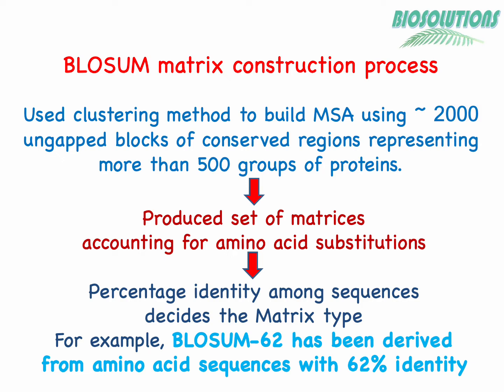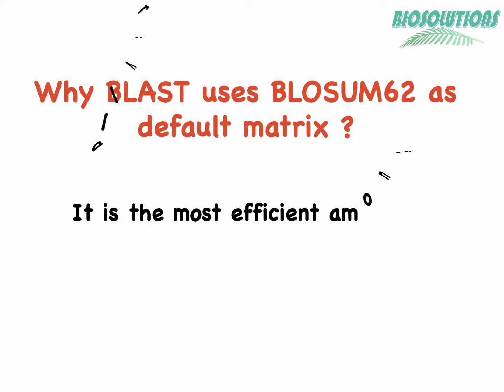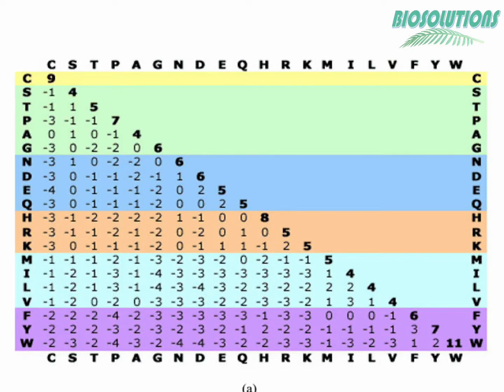Percentage identity among amino acid sequences decides the matrix type. For example, BLOSUM62 has been derived from amino acid sequences which show 62 percent identity — hence the name. Comparison of the efficiencies of different matrices showed that BLOSUM62 works better than any other BLOSUM matrices and PAM matrices. This is why BLAST-p uses BLOSUM62 as a default matrix.